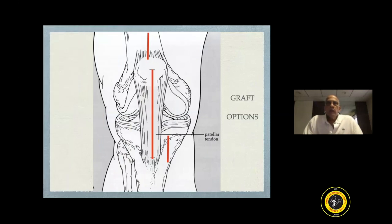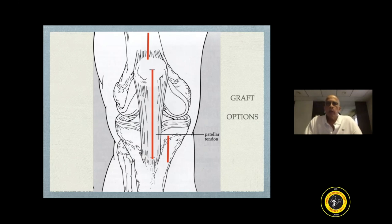One should not be only a bone-patellar tendon-bone reconstructor, or only a hamstring or quadriceps tendon ACL reconstructor. One should have detailed knowledge of how to use any type of graft during an ACL reconstruction. You may find that you have harvested the graft and it is an inadequate hamstring graft, and you may have to shift to the bone-patellar tendon-bone or the quadriceps tendon. Therefore, one should be familiar with all kinds of graft harvests.